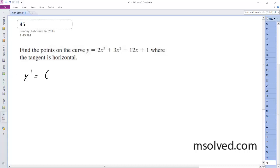So y prime is going to be equal to 6x squared plus 6x minus 12. All right, so factoring this out, we can get 6 quantity x squared plus x minus 2. So we get 6 quantity x minus 1, or excuse me, x minus 1, and then x plus 2.